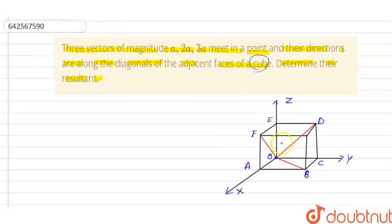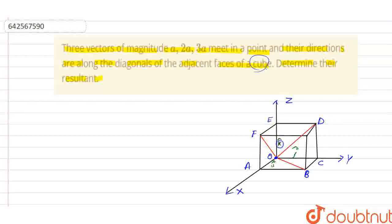Now let I, J, K be the unit vectors along OA, OC and OE respectively. Along OA we have I-hat, along OC we have J-hat, and along OE we have K-hat.